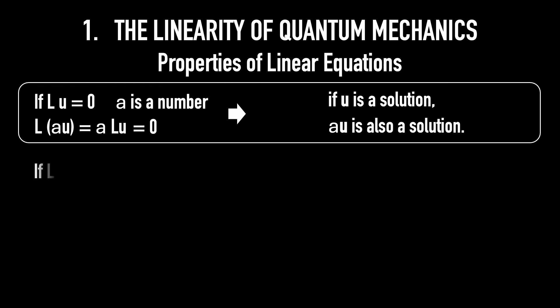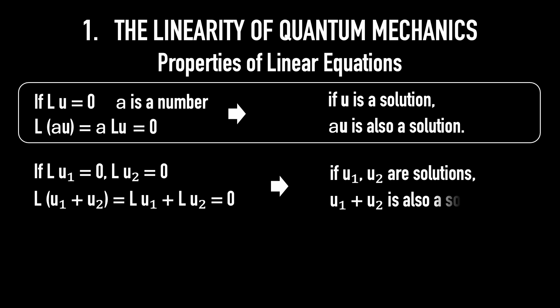If LU1 equals 0 and LU2 equals 0, then L of U1 plus U2 equals LU1 plus LU2 equals 0. Meaning, if U1 and U2 are solutions, then U1 plus U2 is also a solution.